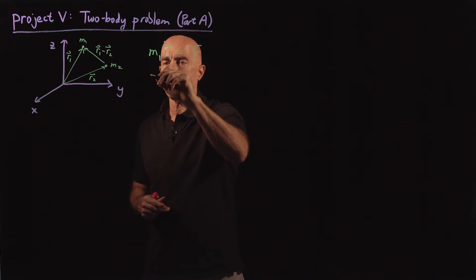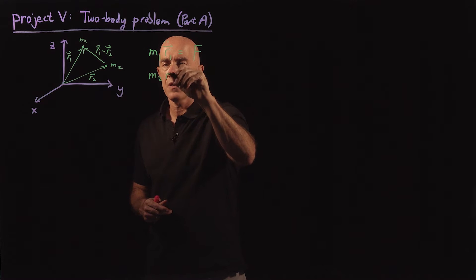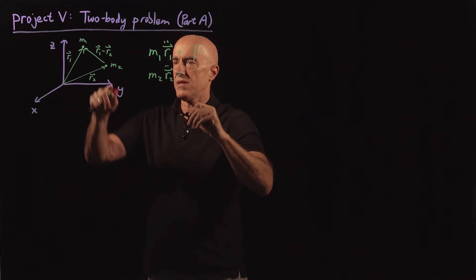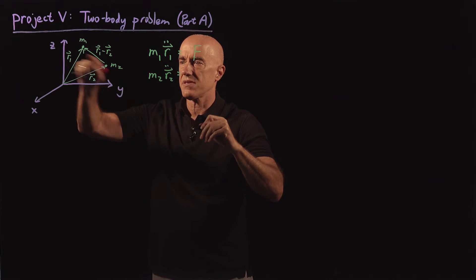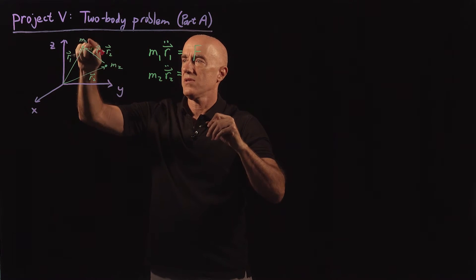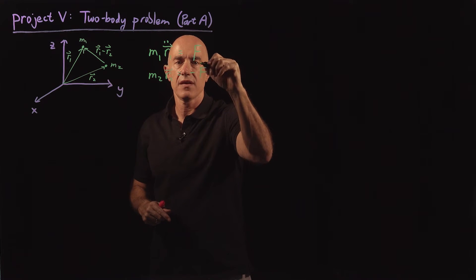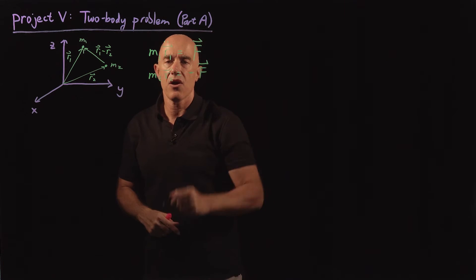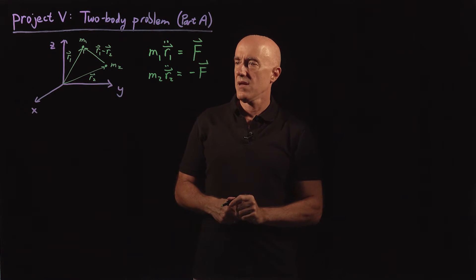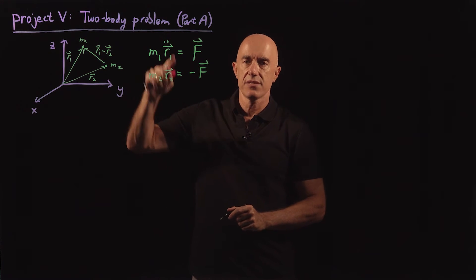And that's equal to some force on m1 due to the gravity of m2. The equation for m2 would be m2 r2 double dot, and that's equal to the equal and opposite force on m2 due to gravity on m1. So this is minus F, and the forces here are both vectors. So this is Newton's second law.